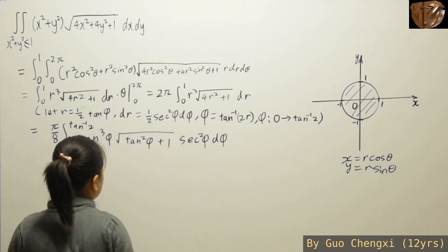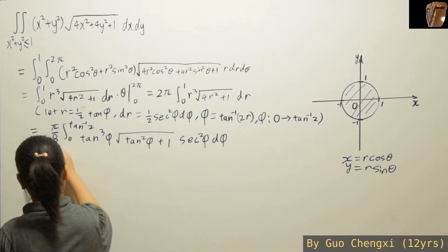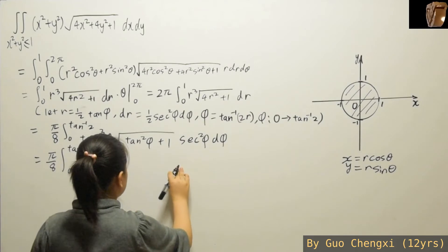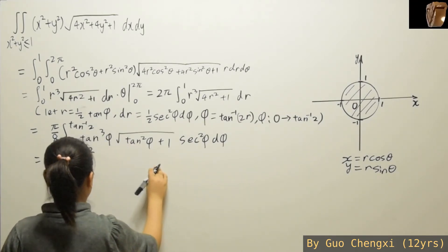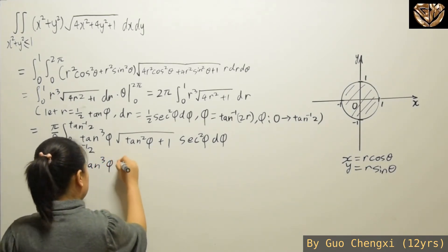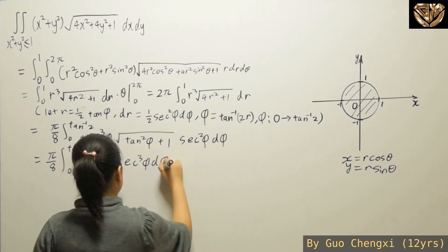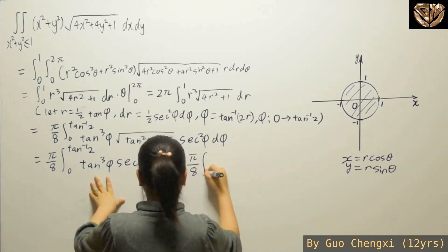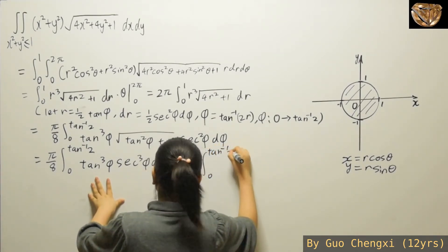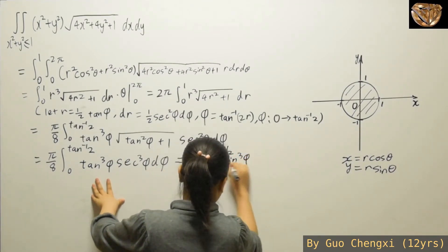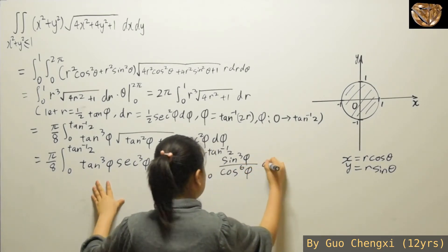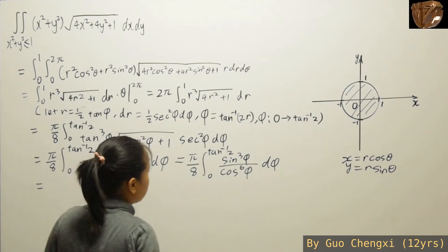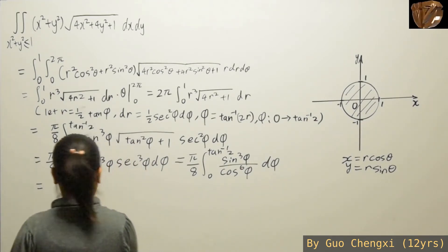Now, 1 + tan²φ = sec²φ, and taking the square root gives just secant. So we have tan³φ · sec³φ dφ. You can separate both into sines and cosines to get sin³φ / cos⁶φ dφ. From here, take one sine factor out, and use the identity sin²θ + cos²θ = 1, so sin²φ = 1 − cos²φ.